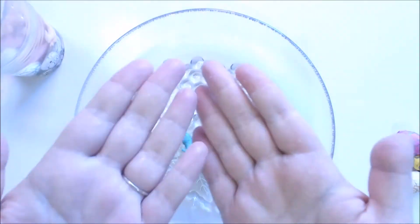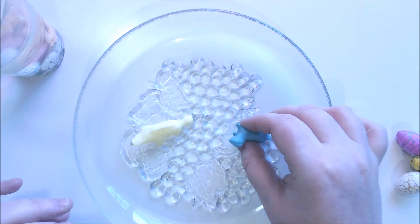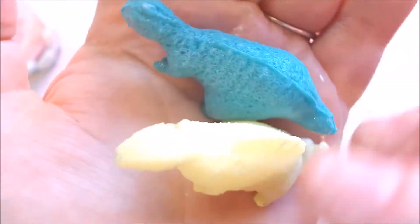Squishy squishy. But they do leave a weird residue all over your hands, which can be kind of disgusting. So these are the two little spongy dinosaurs.